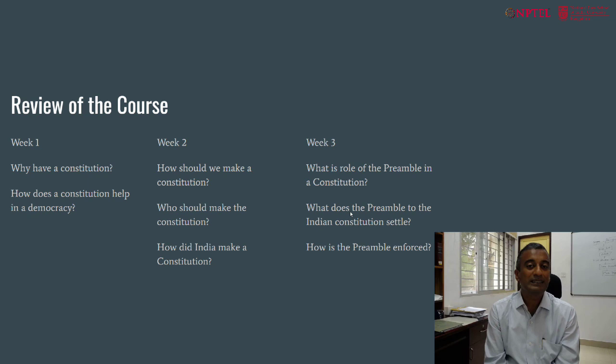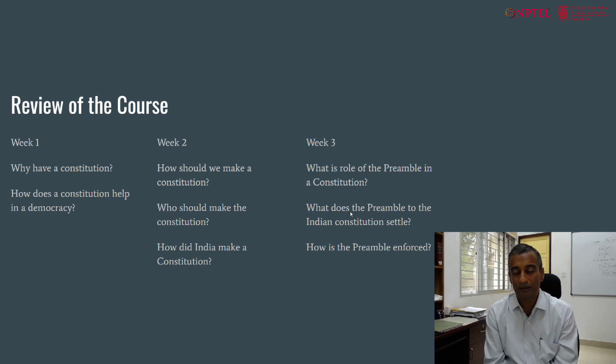Going way back 15 years before independence, we looked at the Karachi resolution and noticed that there might be even older antecedents to the preamble of the Constitution. Most importantly, the preamble settles some very core questions about the design of the Indian polity as well as its goals and purposes. We explored what it means to create a sovereign democratic republic that is both socialist and secular, and what it means to pursue justice, liberty, fraternity and so on.